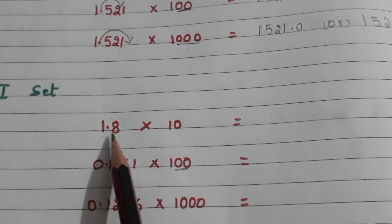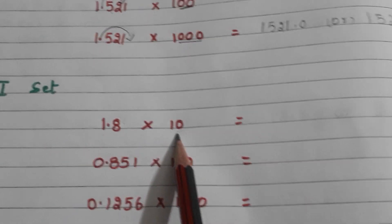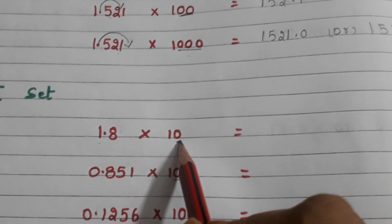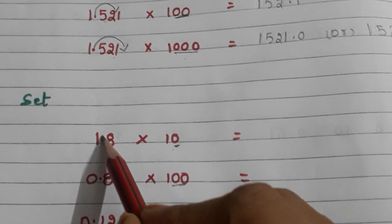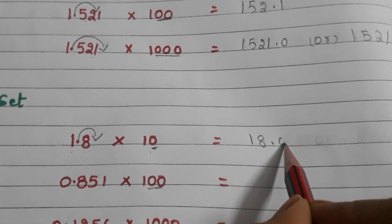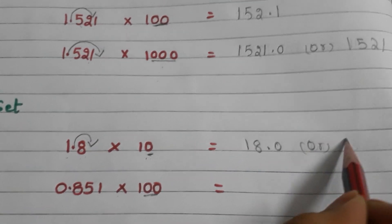Here we have the decimal 1.8 and we are multiplying with 10. In 10 how many zeros are there? Only 1 zero. So we are moving the decimal by one place to the right side. The answer will be 18.